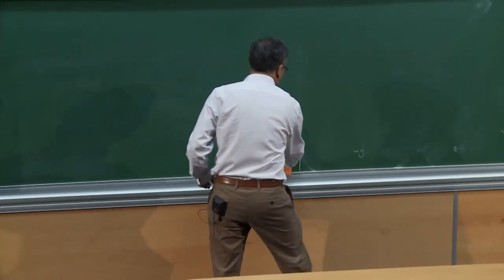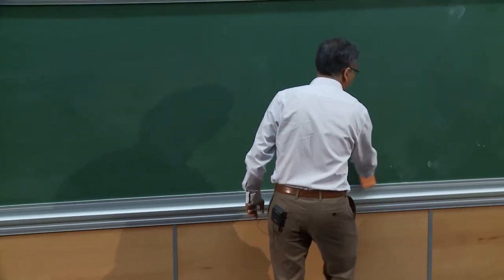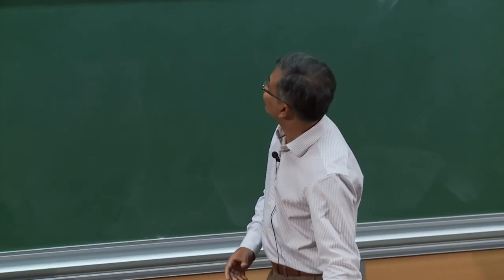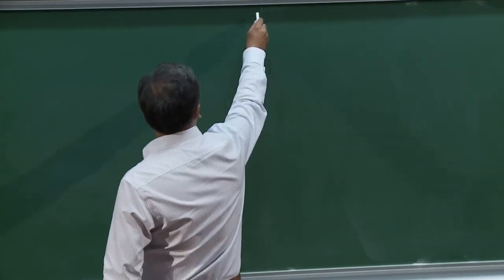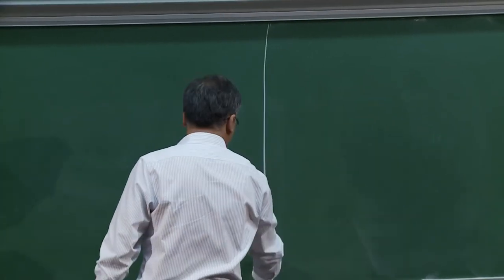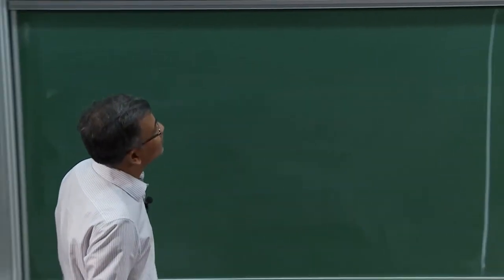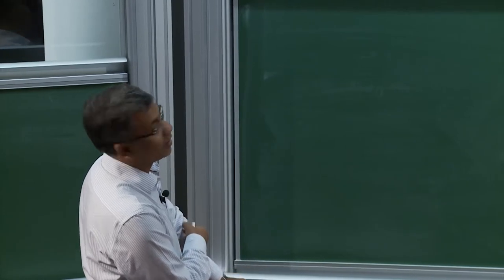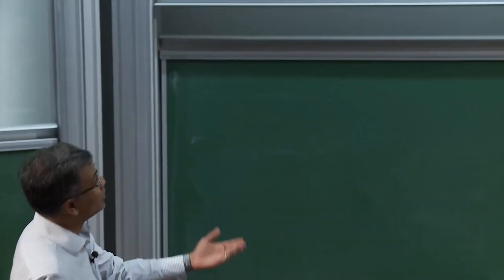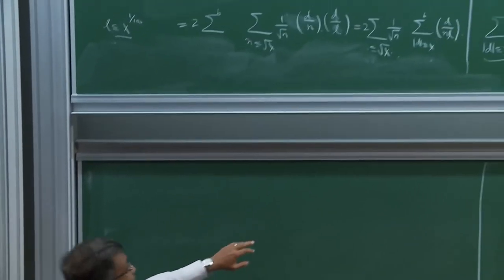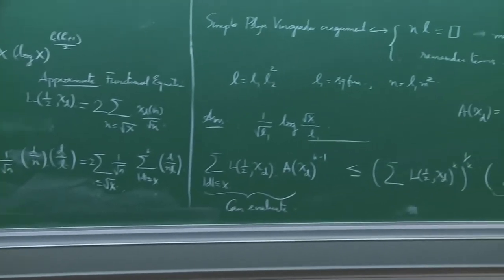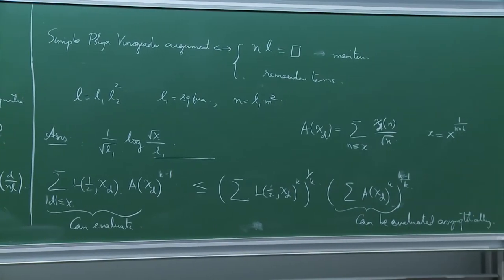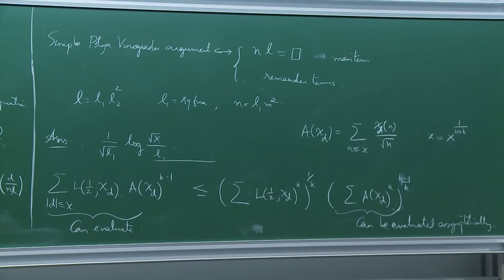I'll begin by finishing this cliffhanger proof. The argument is essentially here already. I should explain how one can evaluate these expressions and why they work out to give the right power of log for the lower bound.